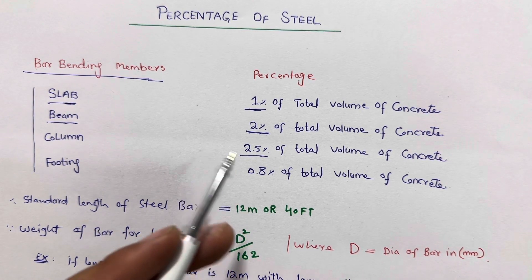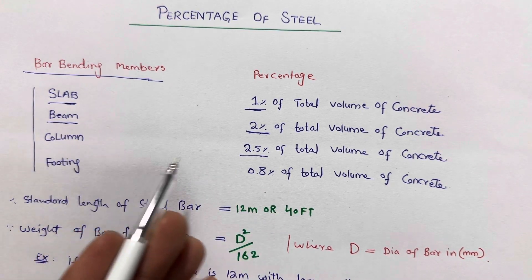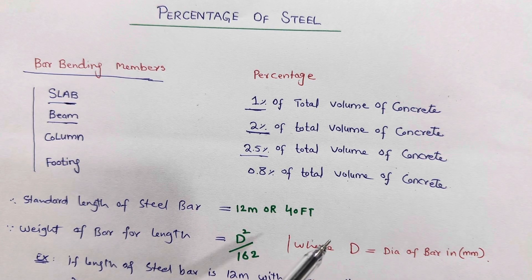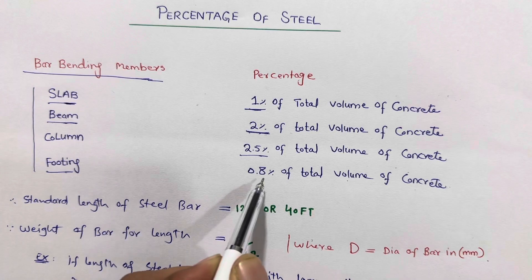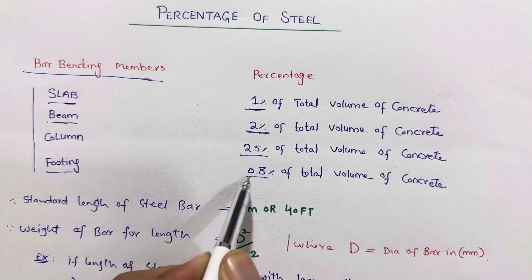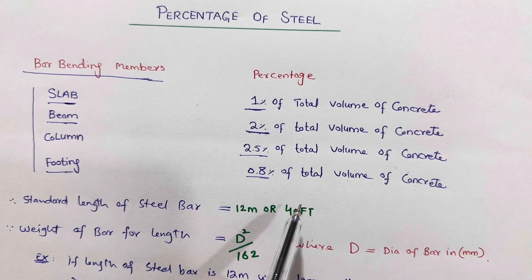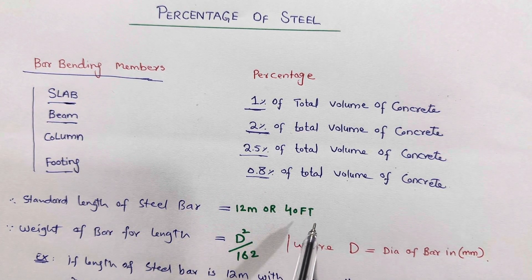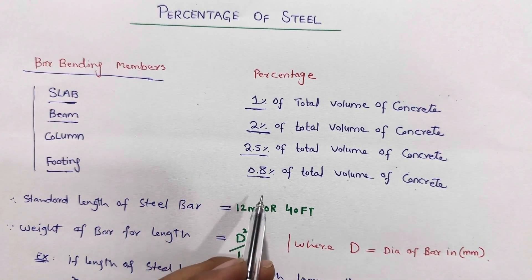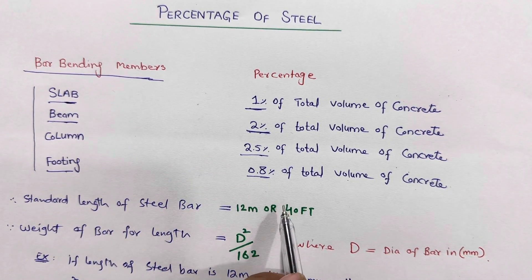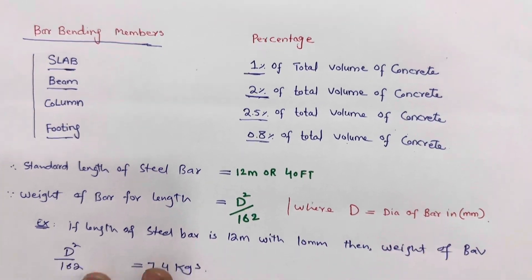For the column we require 2.5 percent. You can use up to 2.5 percent but not more than this, because this is the high value for an RCC column. Next, for footing construction we use 0.8 percent of total volume of concrete. From that volume we use 0.8 percent of steel reinforcement.